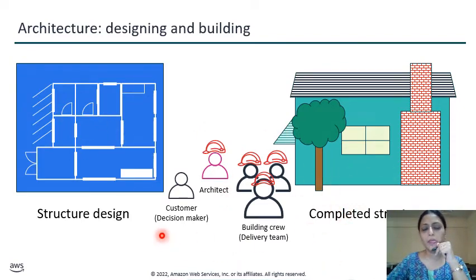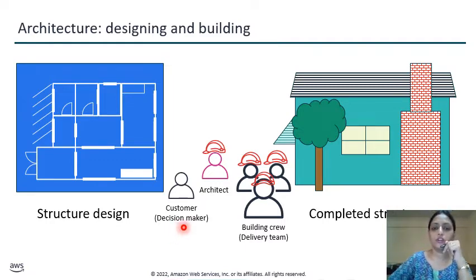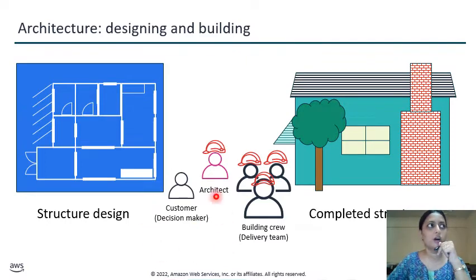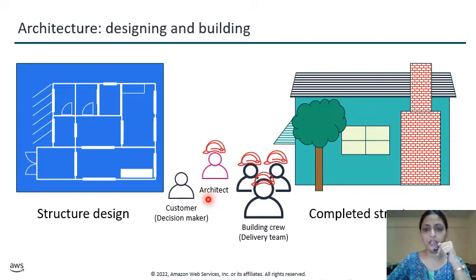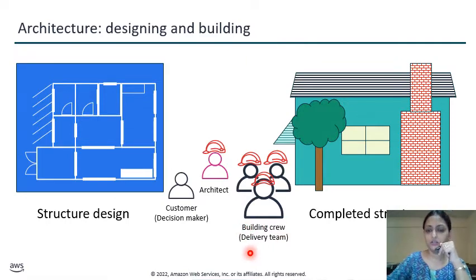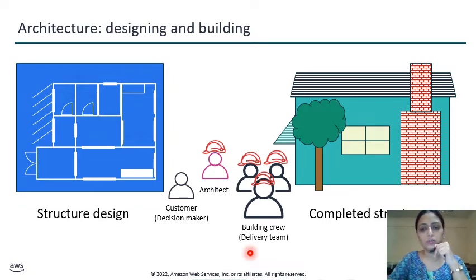It consists of the following: if you want to design any architecture, you need some basic team members. For decision making, you need a customer, and according to their needs you will design your architecture. You need an architect to design your architecture, as well as a building team for the building purpose. The building crew is responsible for content delivery.